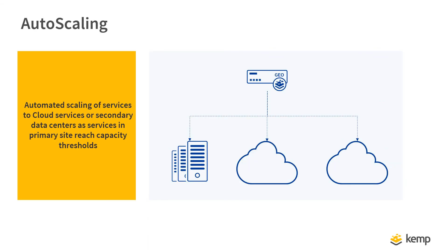KEMP Geo greatly simplifies scaling of services across hybrid and multi-cloud environments. Because Geo can detect not only the availability of a resource but also the capacity, all that is required is to spin up and down services in the cloud as demand changes, and Geo will transparently load balance traffic across all available resources.